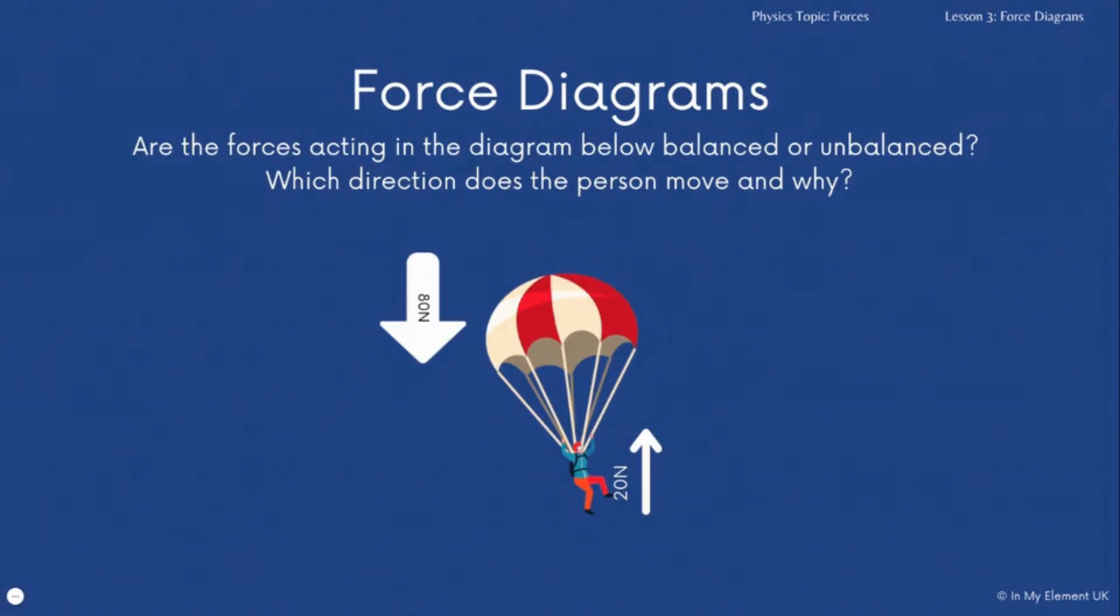Another example is the parachutist. So you've got a downward force of 80 newtons and an upward force of 20 newtons. Notice the different size of arrows so if your forces weren't labeled with an amount you could use the size of the arrow as a representation. So looking at this one the person is going to move down towards the ground because the downward force is bigger than the upward force.